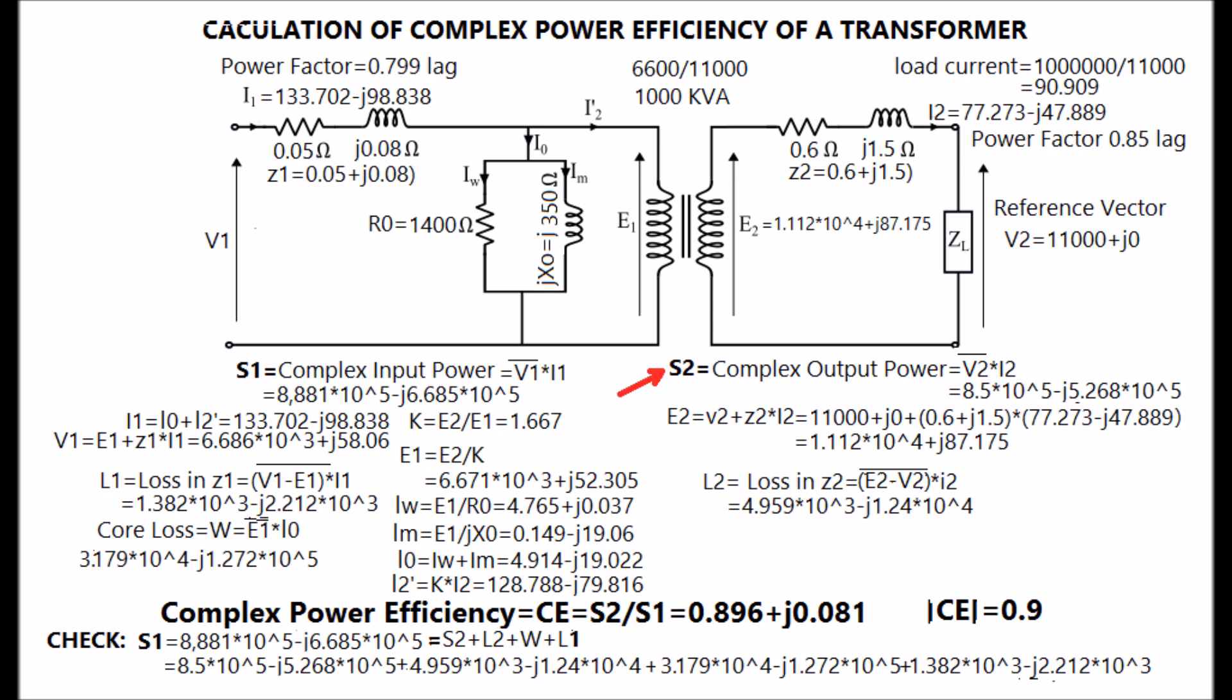Complex power S2 is calculated as V2 conjugate multiplied with I2 as shown in the diagram. The loss in the impedance Z2 is also calculated and given in the diagram.